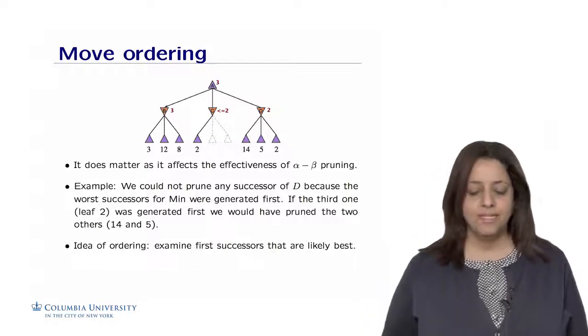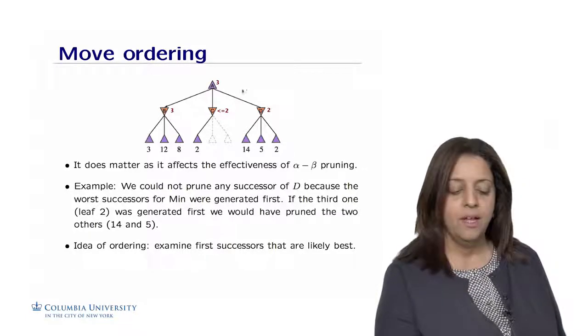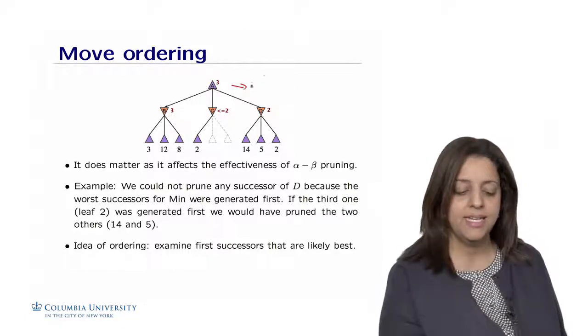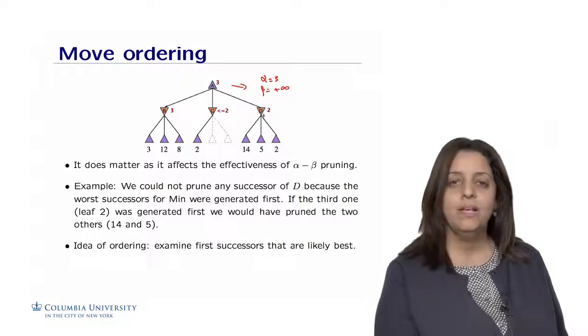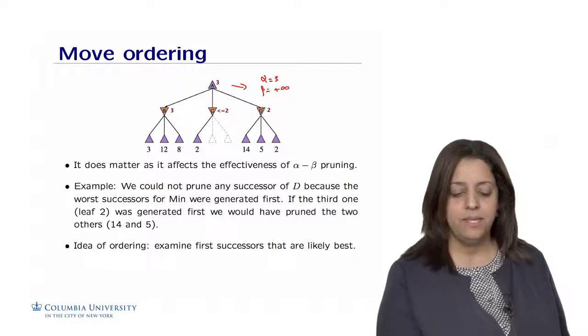For example, if you remember in this example we started with, when we were exploring this node here, we sent as alpha 3 and we sent beta of plus infinity. So when node D, this is a min node, is exploring the children...